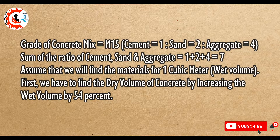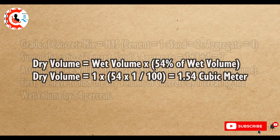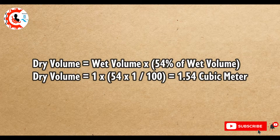First, we have to find the dry volume of concrete by increasing the wet volume by 54%. Dry volume equals wet volume multiplied by 54% of wet volume. Dry volume equals 1 × (1 + 54/100) equals 1.54 cubic meter.